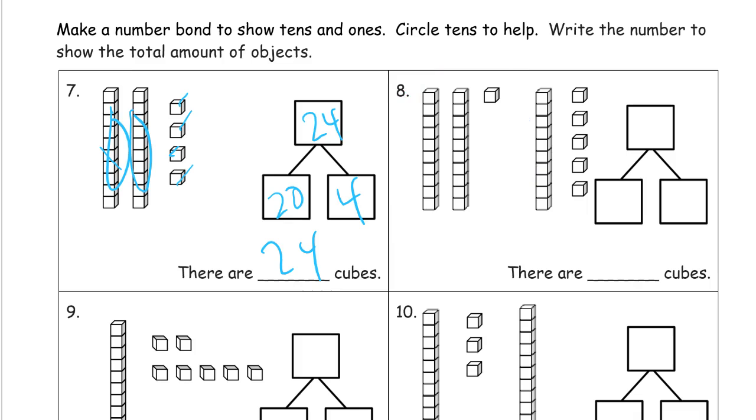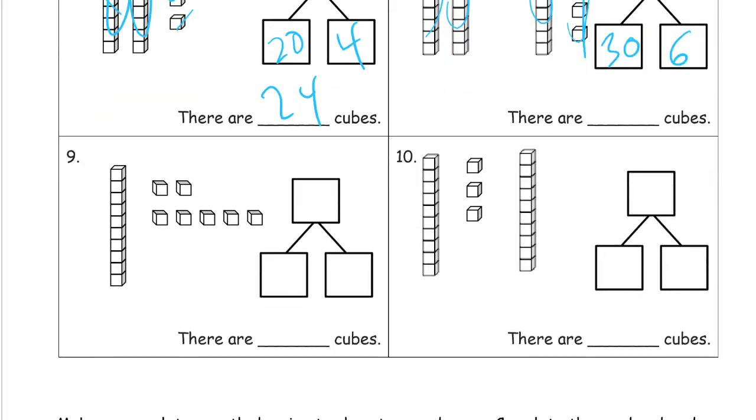But we can just count the tens. Ten, twenty, thirty. And then count the ones. There's a group of five here. One more is six. Thirty and six. Thirty-six. There are thirty-six cubes.